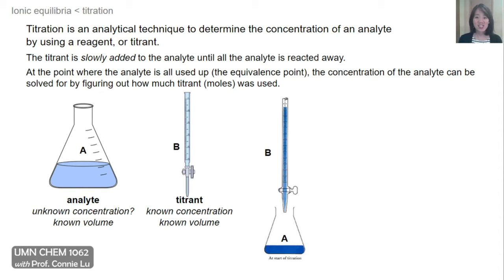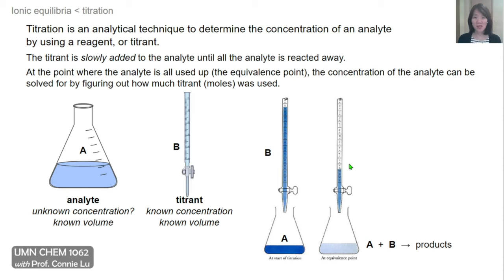We would position the burette above the analyte solution, as shown here, and we would slowly add the titrant dropwise to the solution of the analyte in the flask. At the point where the analyte is all used up, which we call the equivalence point, we can determine the concentration of the analyte by figuring out how many moles of titrant was used.